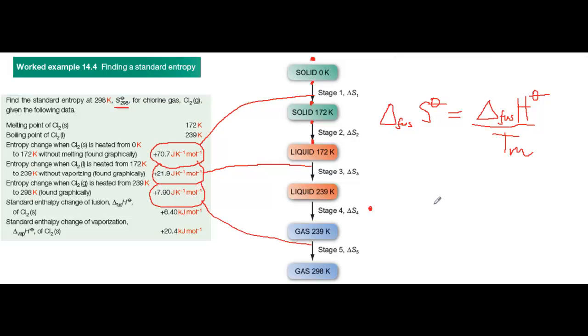So now we have all the separate delta S terms for each step, and all we need to do is to add them all together to get the standard molar entropy at 298 Kelvin. And its value comes to plus 223 joules per Kelvin per mole.